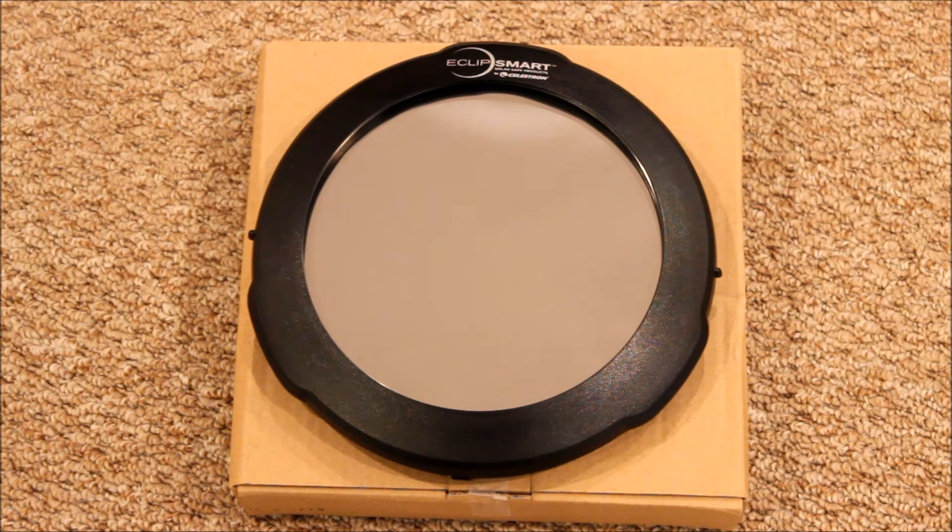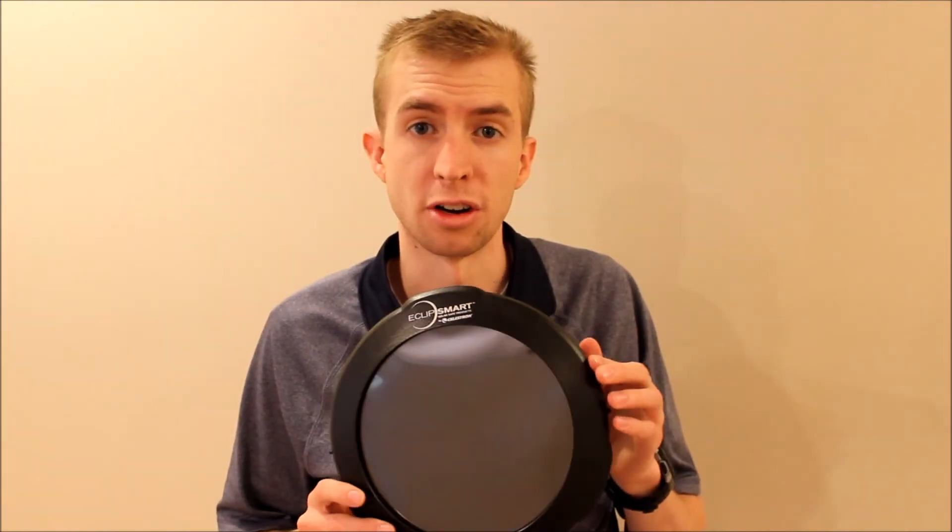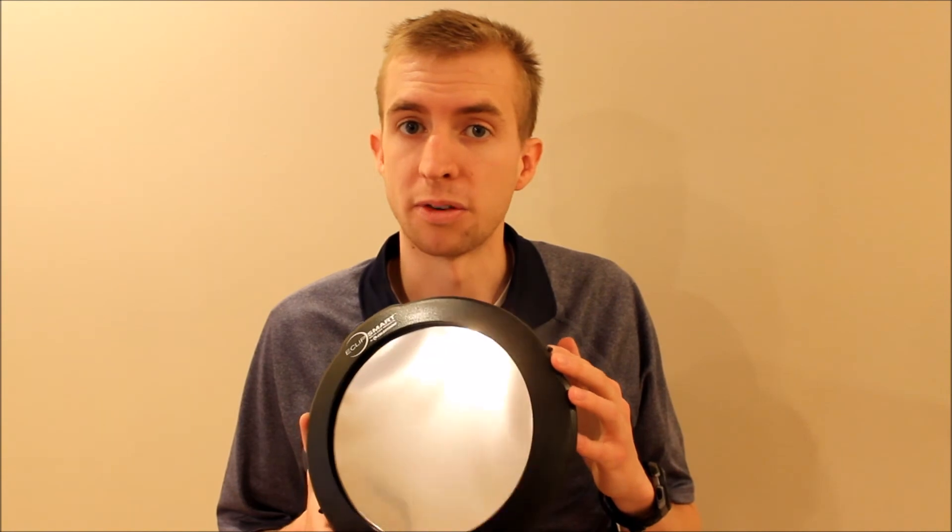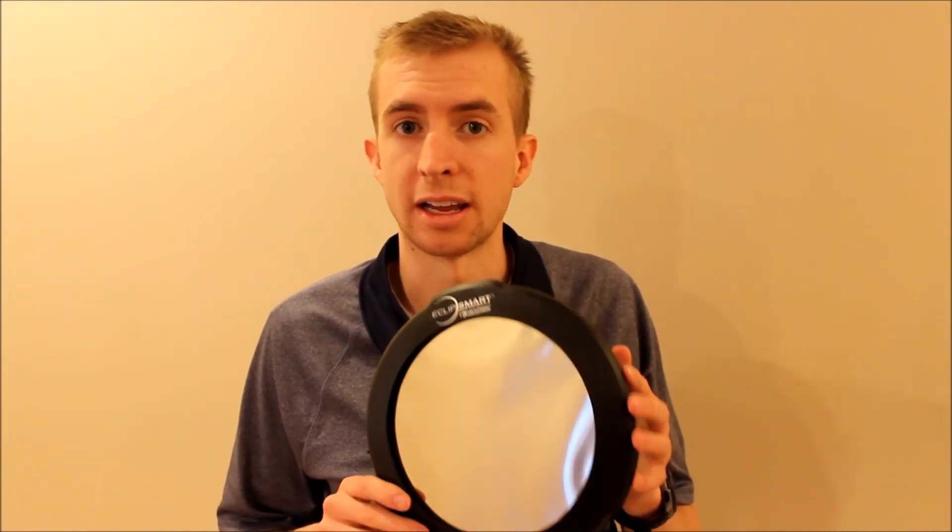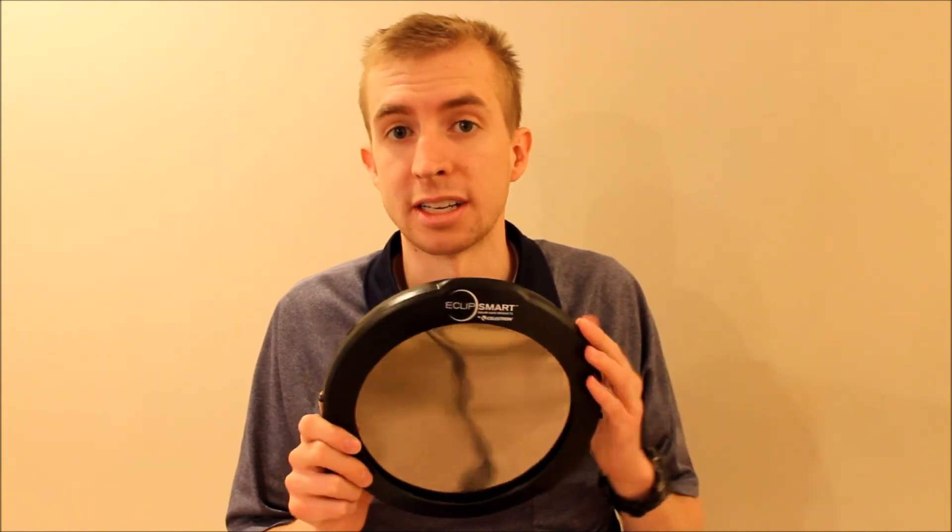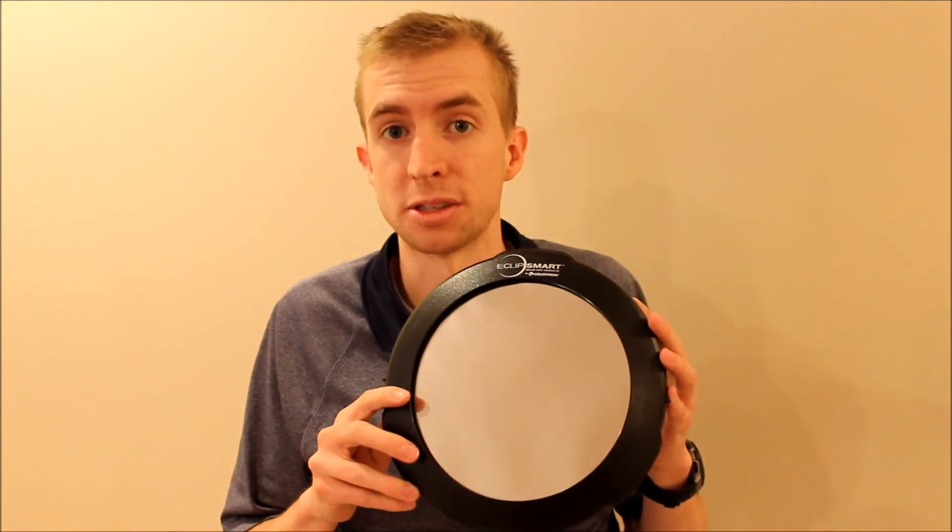Celestron does make the EclipseSmart solar filter for a variety of their telescopes currently. So if you have a 127-millimeter PowerSeeker or a 130-millimeter NexStar SLT, those are both Newtonians, you can get one for those. If you have a 70-millimeter PowerSeeker refractor, you can get one for that. Or the 8-inch Schmidt-Cassegrain, which is what this one is. And they also make it for all of their 6-inch Schmidt-Cassegrain telescopes as well.